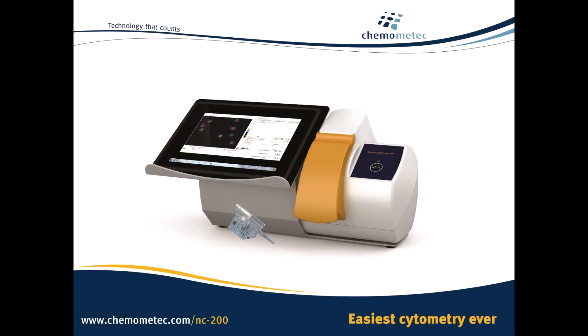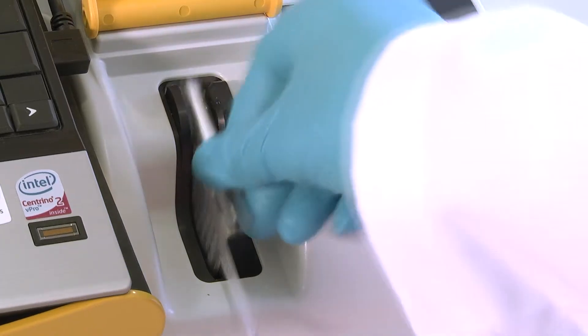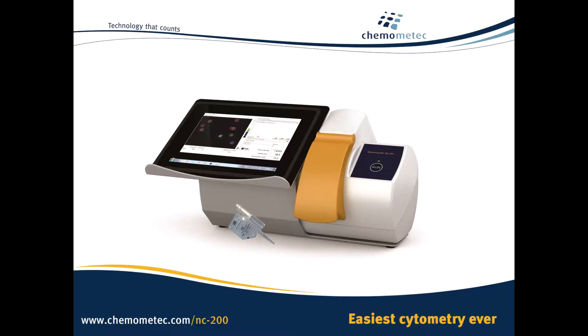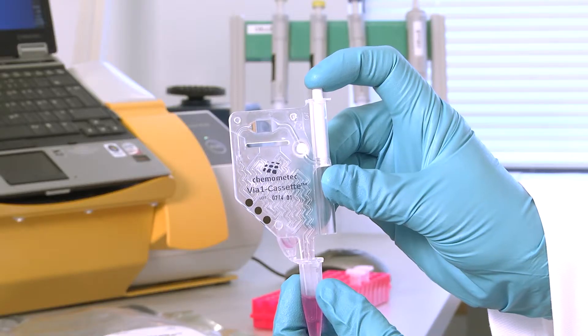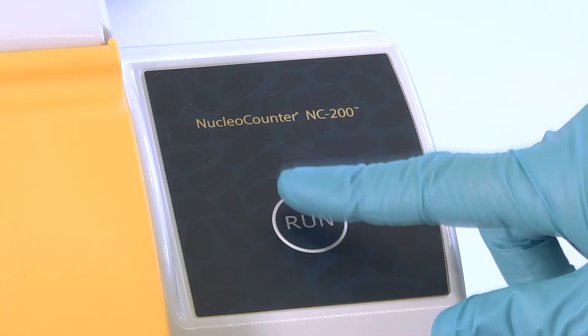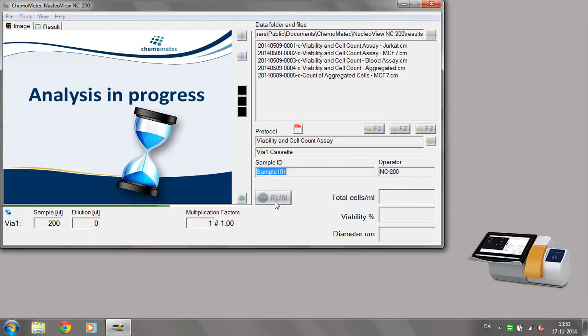The NucleoCounter NC200. High precision cell counting has never been easier. Simply load the cassette, insert and press run. In less than 30 seconds you have your results.